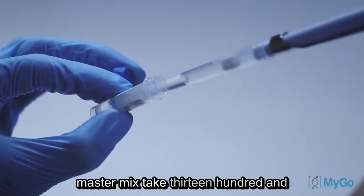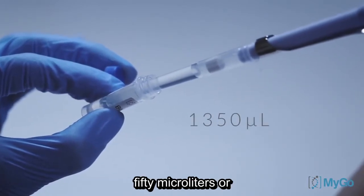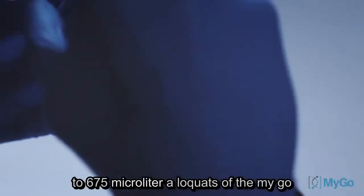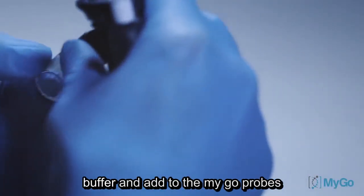First, we need to make up the master mix. Take 1350 microliters or two 675 microliter aliquots of the MIGO buffer and add to the MIGO probe's master vial.